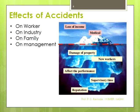The effects of accidents are considered across four parameters: impact on the worker, on the industry, on the family of the worker, and on management. Effects on the worker include injuries to the body, loss of skill, loss of job, recovery leave, lowered confidence level, affected career growth, and financial loss. Effects on industry include production stoppage, bad message to other workers, lowered reputation, financial losses for compensating the affected worker, and extra costs for recovery of machines and buildings.